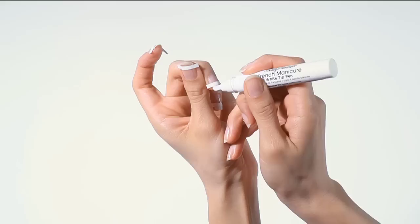Next, shake the Sally Hansen French manicure pen well. Prime the French manicure pen by pressing the tip repeatedly on a hard surface until you see the color start to come through the brush tip.